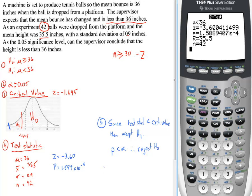And what that means in terms of the story is that the tennis balls are no longer bouncing to 36 inches. So as the manager expected, the machine is not working. And the tennis balls are not bouncing as they should. And so that's an example of a one tail Z test.